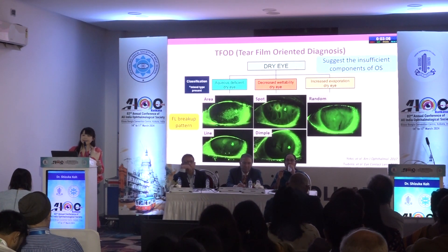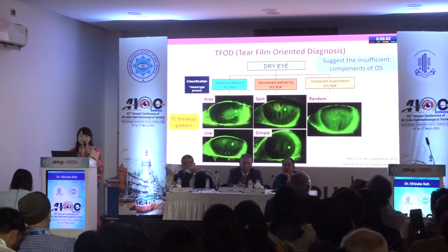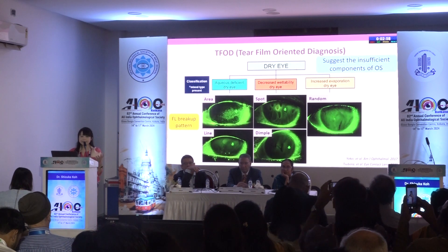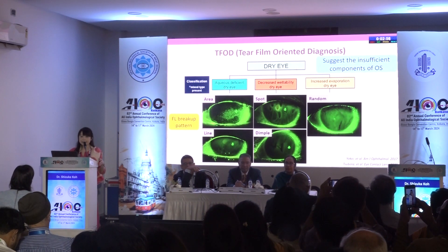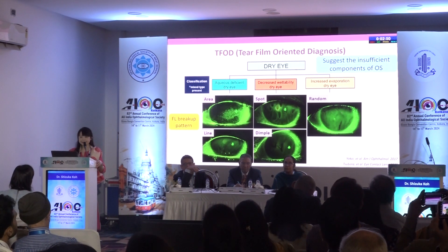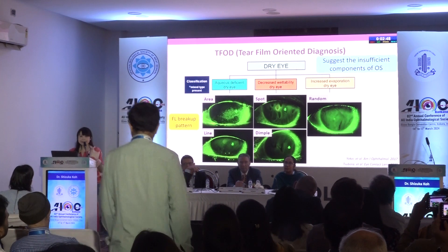Tear film-oriented diagnosis is based on the fluorescein break-up pattern. We can classify dry eye into three types: aqueous deficient dry eye, decreased wettability dry eye, and increased evaporation dry eye. Let me explain with a movie.